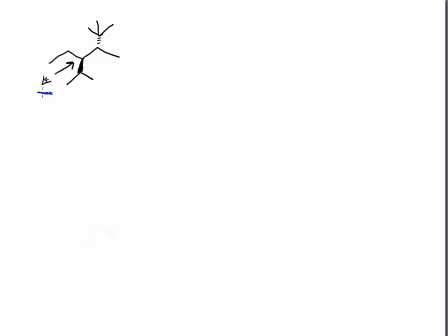Here are some additional practice problems in drawing Newman projections. We have a question where we're asked to draw a Newman projection of this molecule as viewed from the indicated direction. Remember that a Newman projection involves drawing a front carbon with its three different groups, and then drawing the rear carbon with its three different groups.